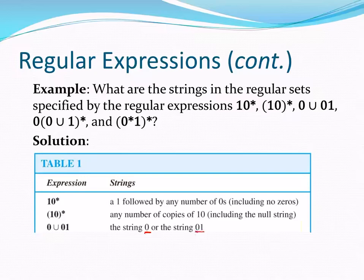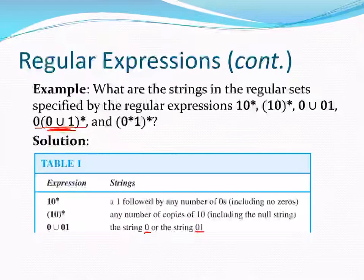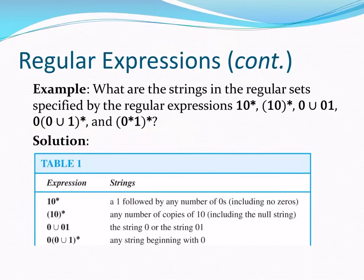How about 0 union 01? That's straightforward — just the string '0' or the string '01'. Now consider 0 concatenated with (0 union 1)*: the (0 union 1)* is like Σ* — all possible bit strings. Adding a zero to the front gives all possible strings that begin with a zero.